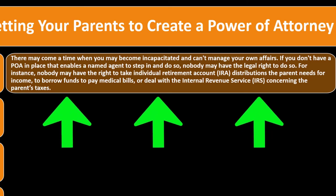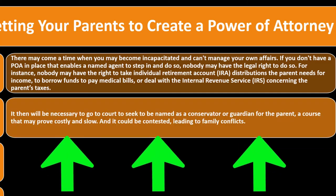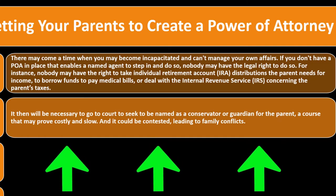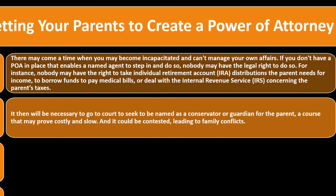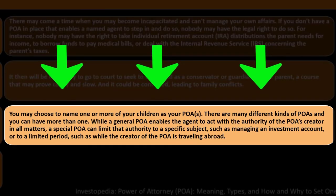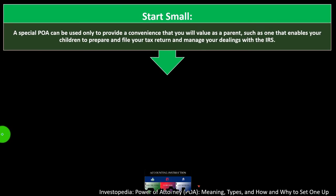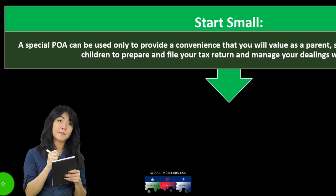If you don't have a POA in place that enables a named agent to step in, nobody may have the legal right to do so. For instance, nobody may have the right to take individual retirement account (IRA) distributions the parent needs for income, to borrow funds to pay medical bills, or to deal with the IRS concerning the parent's taxes. It will then be necessary to go to court to seek to be named as a conservator or guardian — a process that may prove costly, slow, and contestable, leading to family conflicts.